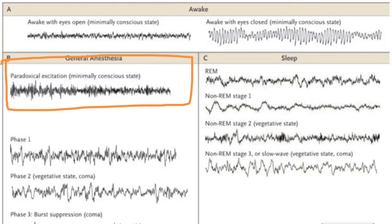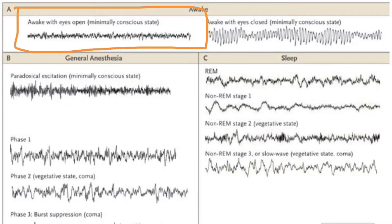You can see that on EEG. If you look at the first phase of anesthesia, it's a little bit higher amplitude than the awake state. But wait — excitation. Yeah, there's no excitation in sleep.